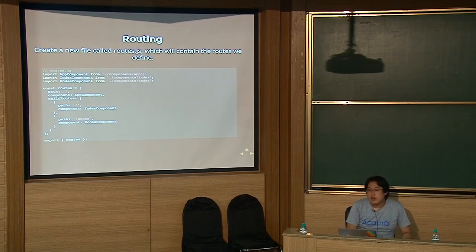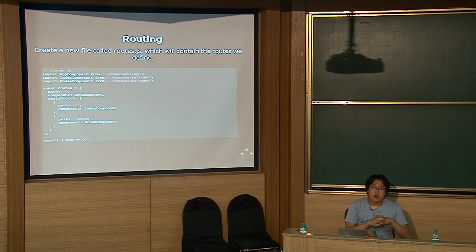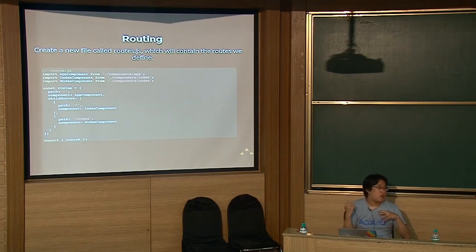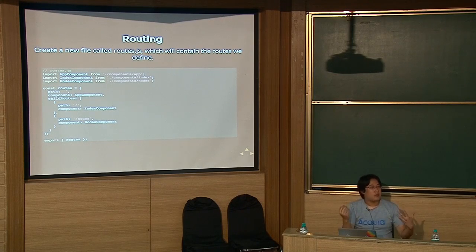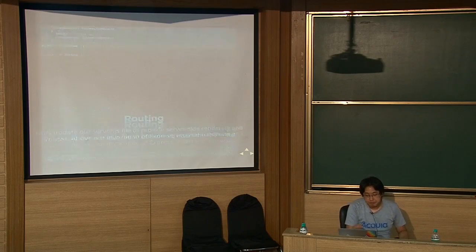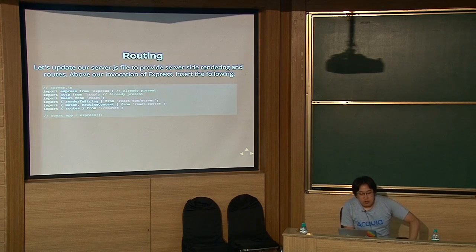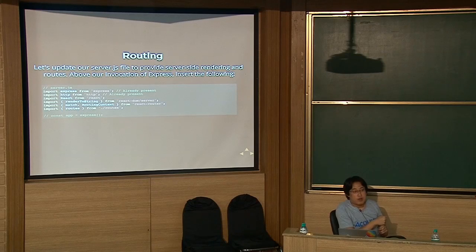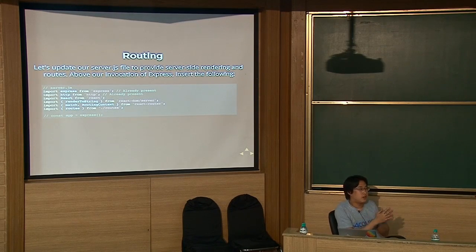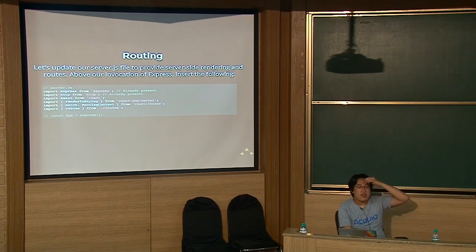Routing is very important for having multiple paths in your application. You'll export an object containing your routes and set up a hierarchy: the slash route and the slash-nodes route point to the IndexComponent and NodesComponent respectively as child routes. In your server.js file, underneath the import statements, you'll import React for server-side rendering, renderToString from React DOM — which concatenates all your components into a single HTML string to serve to the client — React Router dependencies, and your routes exported from routes.js.